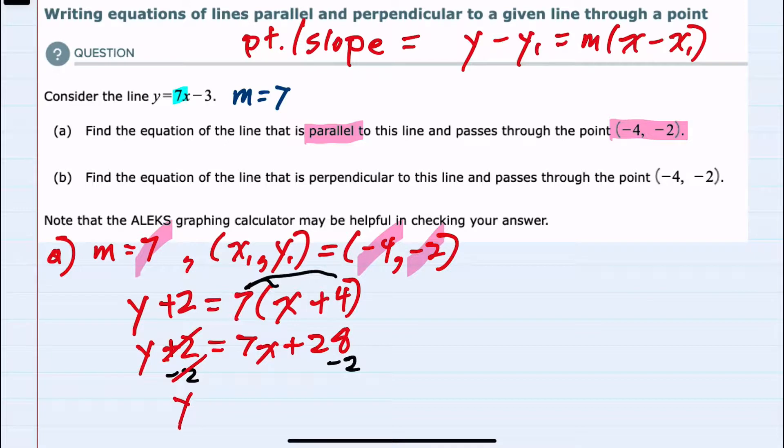Lastly, subtracting 2 from both sides to isolate the y gives us y equals 7x plus 26, so this is our equation for part A.